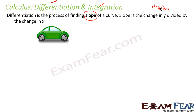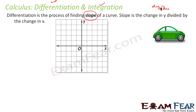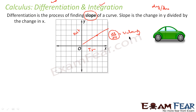For example, we have a car moving and for this car we have a distance-time graph. This is distance and this is time. We have some graph, and we want to find at a certain point in time what the velocity is. We can find the slope at that point, which will be nothing but delta s by delta t — that is nothing but the velocity at that point in time. So differentiation is nothing but the process of finding slope.